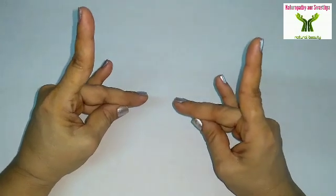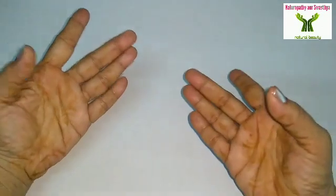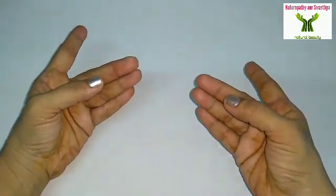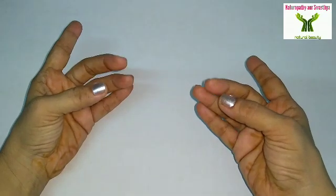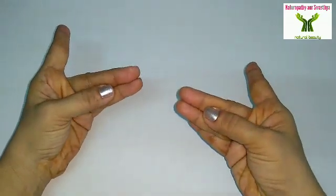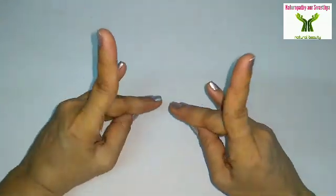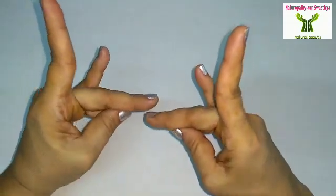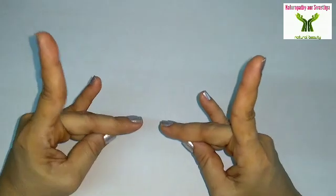Once again, I will show you how to do this mudra. Just you have to touch the tip of the thumb in the center of the middle and the ring finger, just like that. And the remaining index and the pinky finger, that is the smaller finger, straight. That's all. This is your Mrigi Mudra.